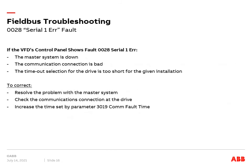Regarding fault 0028 Serial 1 Error, if the VFD's control panel shows this fault, then either the master system is down, the communication connection is bad, or the timeout selection for the drive is too short for the given installation. To correct this problem, resolve the issue with the master system, check the communications connection at the drive, or increase the time set by parameter 3019 COM fault time.